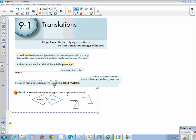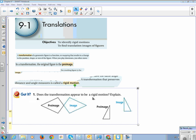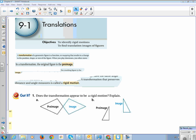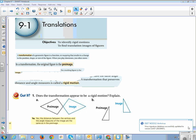So when we look at our first question here, does the transformation appear to be a rigid motion? Explain. If we look here, pre-image and image, they appear to be the same size. All we're doing is we're flipping it. So yes, the distances between the vertices and the angle measures of the image are the same as in the pre-image, so we can call it a rigid motion.